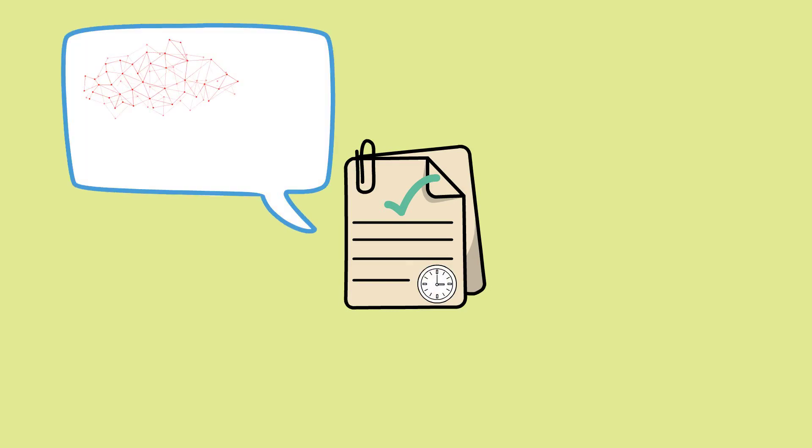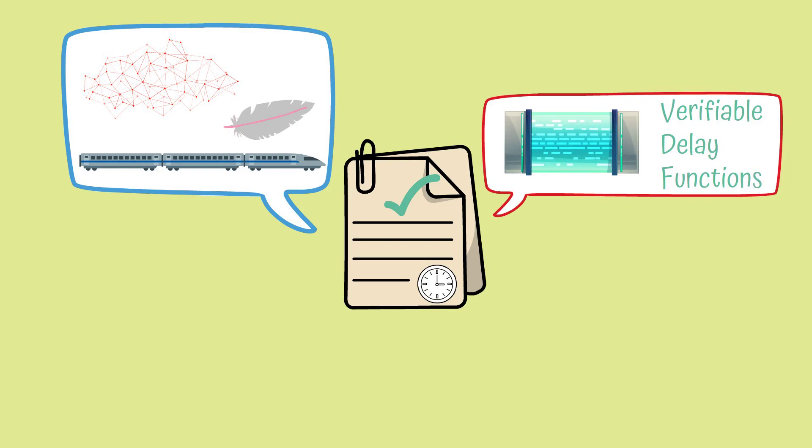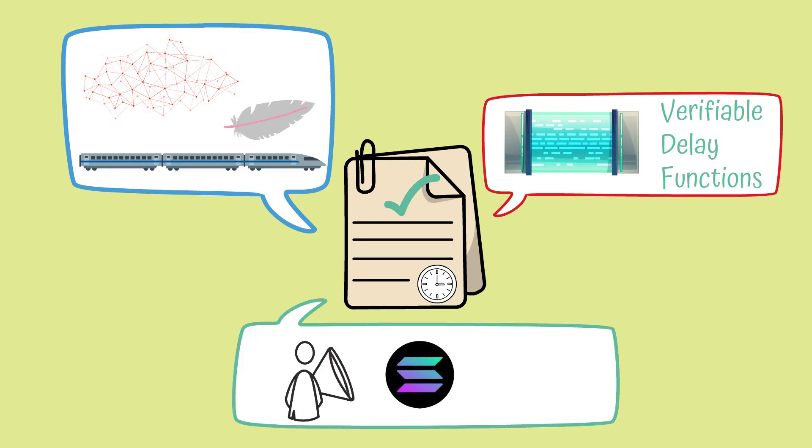Conclusion. In short, proof of history lets users create a historical record that works as proof that an event took place at a certain moment in time, making the network faster and lighter. Proof of history relies on a new cryptographic concept known as Verifiable Delay Functions, or VDF. Solana is the blockchain that popularized this way of working. It also uses proof of history and a security protocol known as Tower Byzantine fault tolerance. While Solana confirms 25 blocks proposed by 25 different validators, other networks could confirm only one.